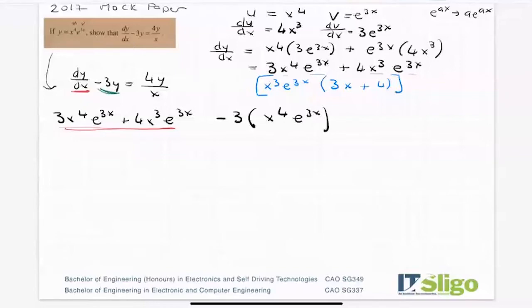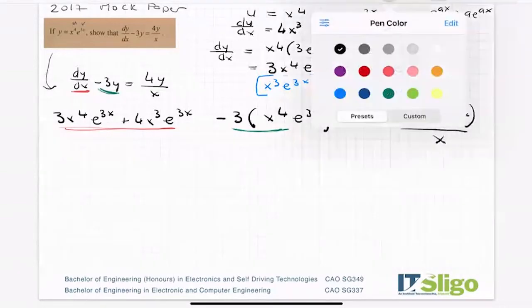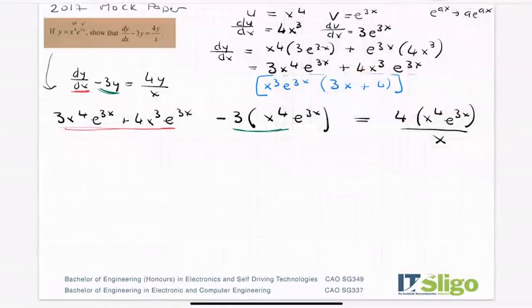So what have I done there? There's my minus 3y. And then that's equal to or should be equal to 4 times y, which is y from the question over x. There's nothing to sub in for x. So where is all that coming from? Let's pick a different color, orange. There's 4y over x. Y in all cases being here.